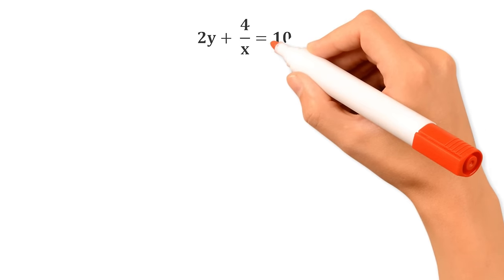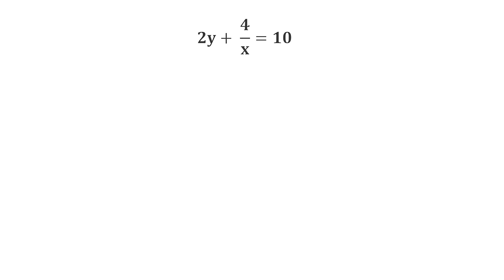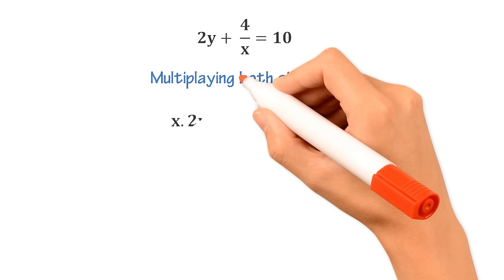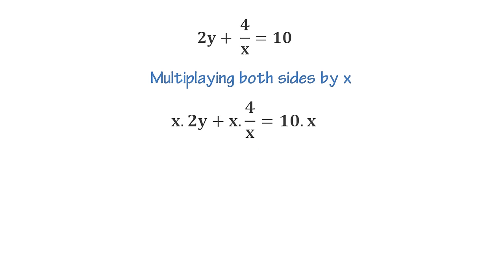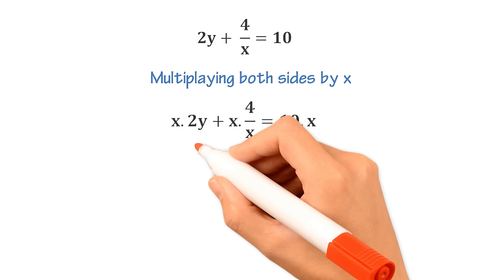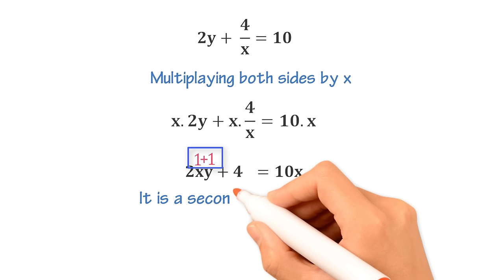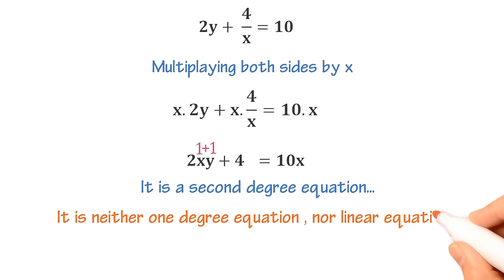Similarly, if I write 2y plus 4 upon x is equal to 10, can you guess the highest power of this equation? To simplify this equation, we multiply both sides by x. Here, x and x are cancelled out. As a result, we get 2xy plus 4 is equal to 10x. Now there are three terms in this equation. The power of variables in the first term 2xy: the power of x is 1 and the power of y is also 1. Thus, 1 plus 1 is equal to 2. Hence, the highest power of the first term is 2. So it is a second-degree equation. Therefore, it is neither a one-degree equation nor a linear equation.